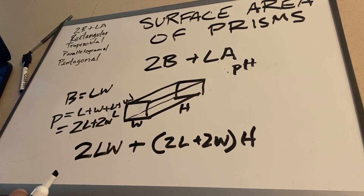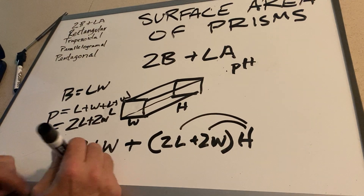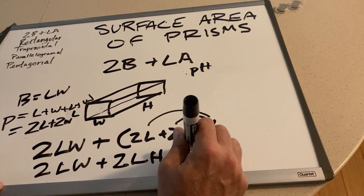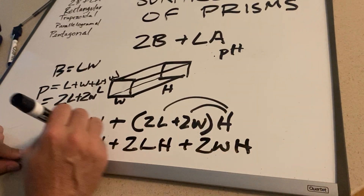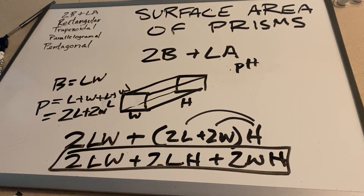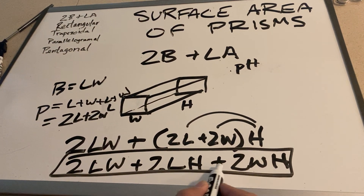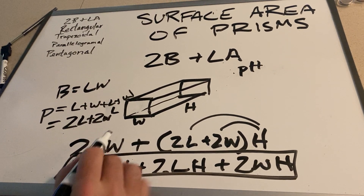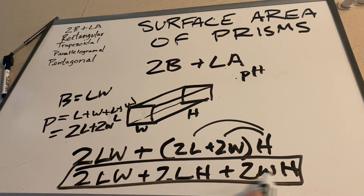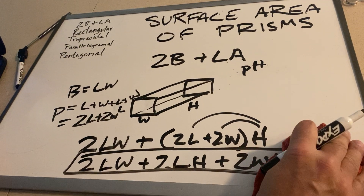It's just perimeter times height — my bad. So now let's distribute this H, and we get 2LW plus 2LH plus 2WH. And here is the formula for the surface area of a rectangular prism: 2LW plus 2LH plus 2WH. Notice we have three different combinations of length, width, and height — LW, LH, WH — and we multiply each of them by two. That's how we find the surface area of a rectangular prism.